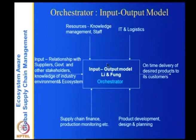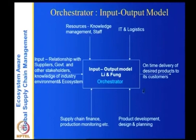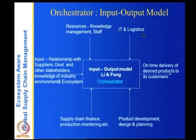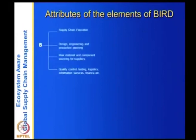Other inputs are resource and knowledge management. Li and Fung does factory sourcing, which is part of the product development, design and planning, and supply chain planning. The input-output model has five inputs from Li and Fung, and the output is on-time delivery of desired products to its customers. You can closely see what kinds of things are involved — the inputs required for any orchestrator.